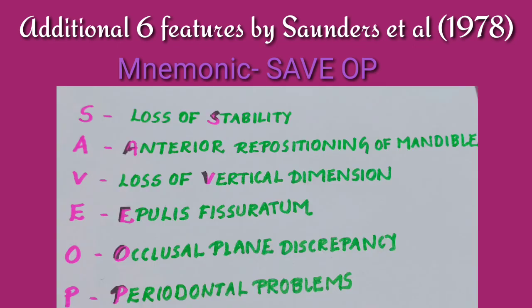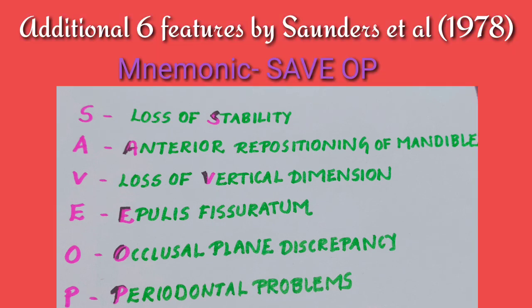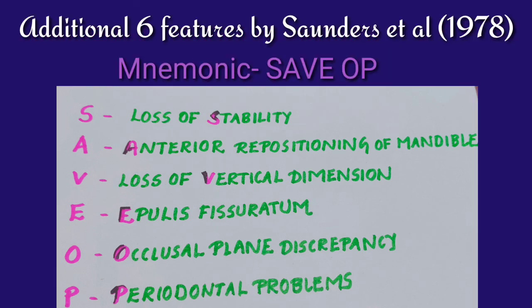Apart from these five cardinal features, there are six additional features put forward by Saunders et al. in 1978. They include loss of vertical dimension, occlusal plane discrepancy, anterior spatial repositioning of the mandible, loss of stability and refabrication of the existing dentures, epulis fissurata, and periodontal problems of the remaining teeth.